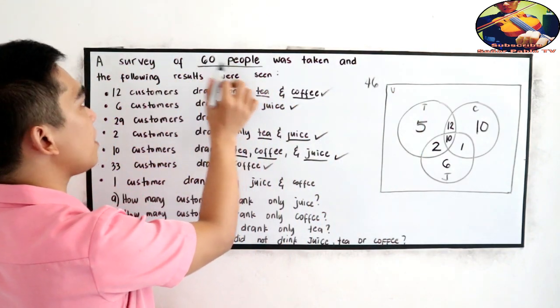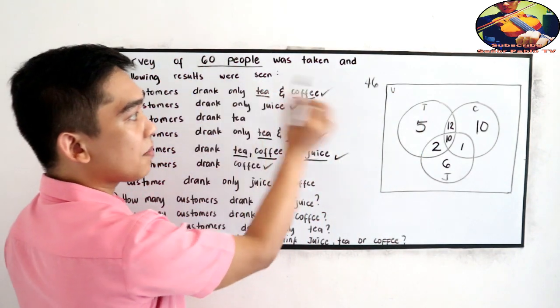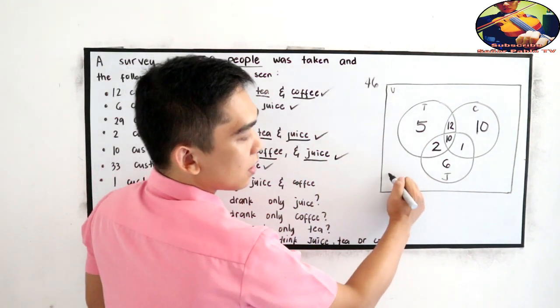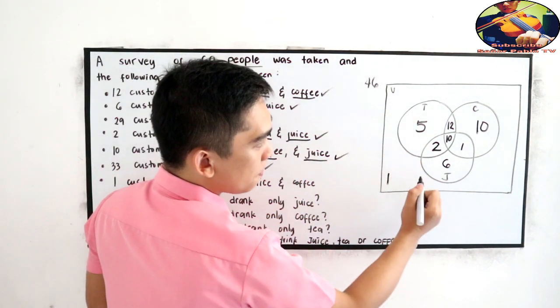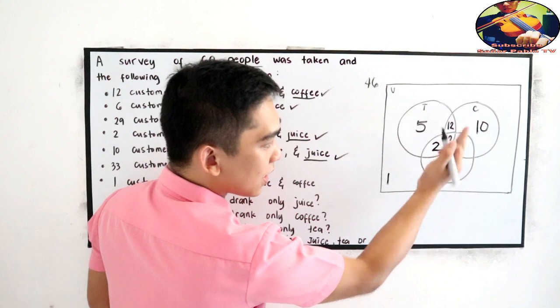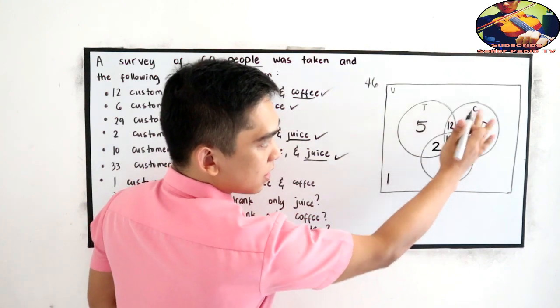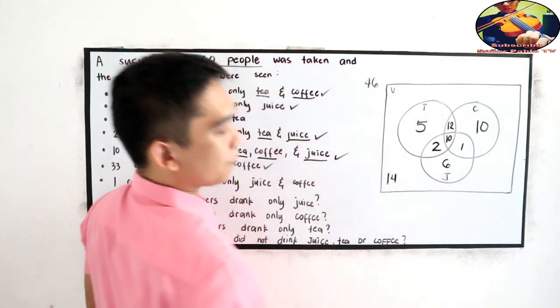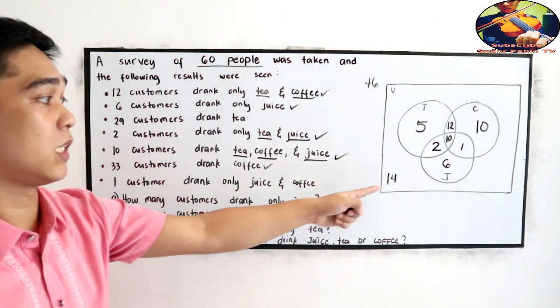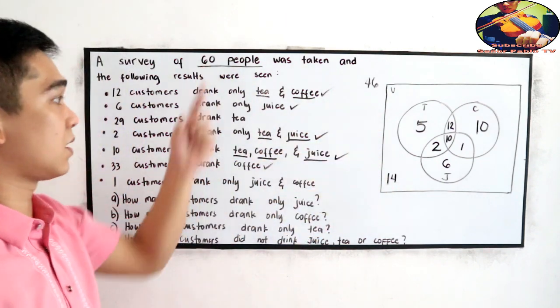There are 60 people who were surveyed. So 60 minus 46. Outside our given data will be 14. Because we have a total of 60. So 46 plus 14 is 60.